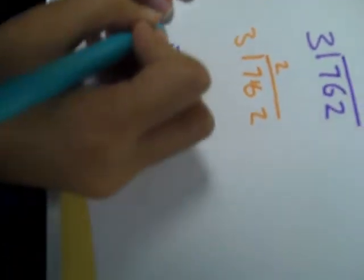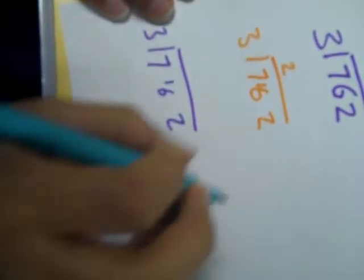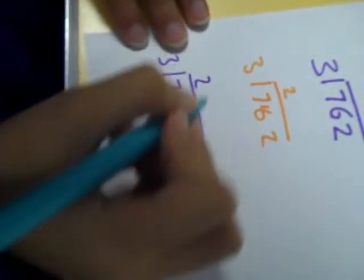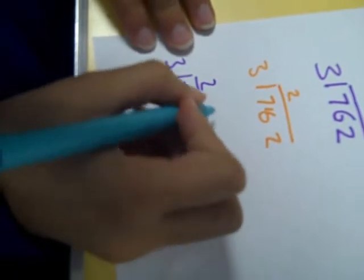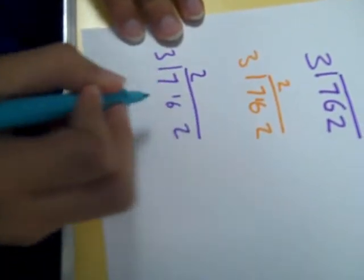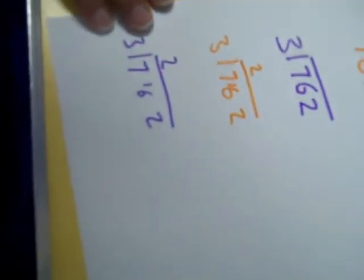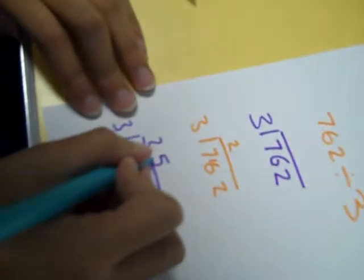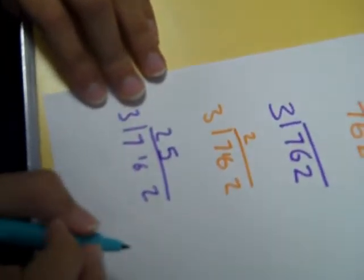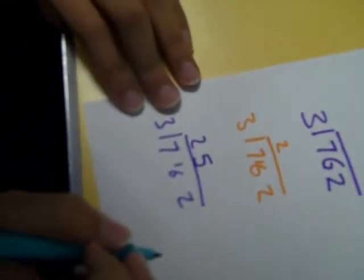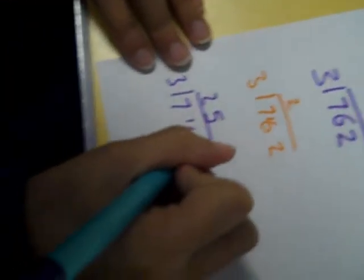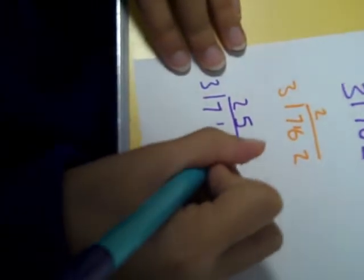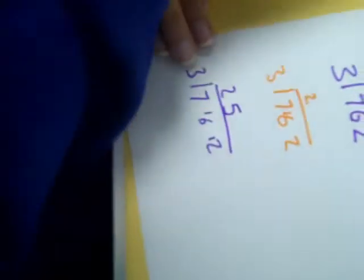You check how many times 3 goes into 16. It goes into 16 five times and you still have a remainder of 1. So you make the 2 into the number 12. You see how many times 3 goes into 12 — it goes into 12 four times.